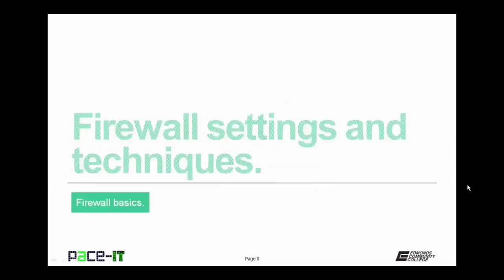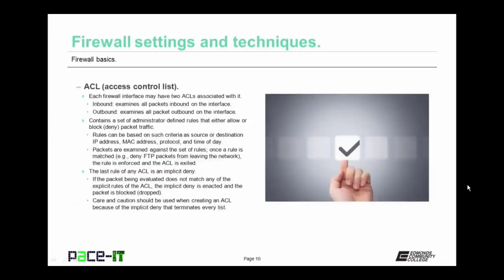It's time to proceed with firewall settings and techniques. First up is the ACL. Each firewall interface may have two ACLs associated with it — an inbound ACL and an outbound ACL. The inbound ACL examines all packets inbound on that interface, and the outbound ACL examines all packets outbound. The ACL contains a set of administrator-defined rules that either allow or deny packet traffic. Rules can be based on such criteria as source or destination IP address, MAC address, protocol, and time of day.